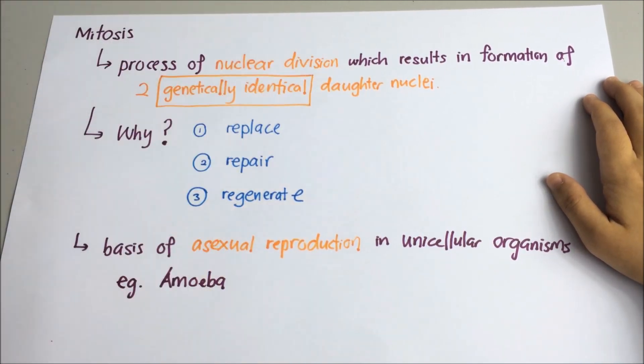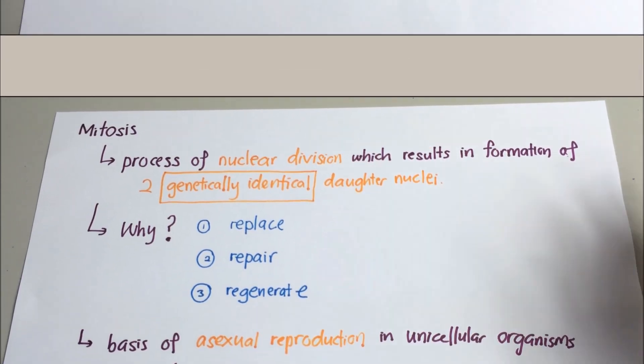Remember the keyword here is genetically identical. Before we go into the details of the process of mitosis, it is important for you all to know how to count the chromosome. This is one chromosome.